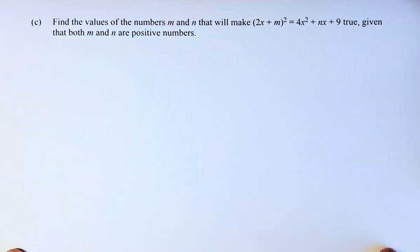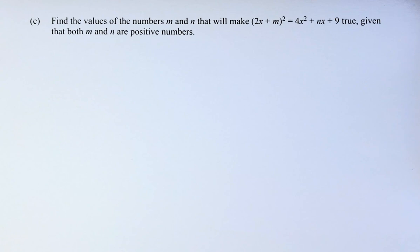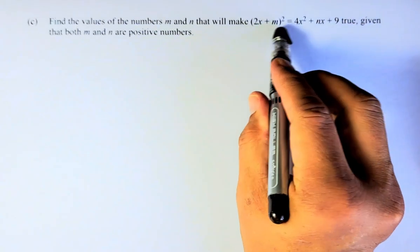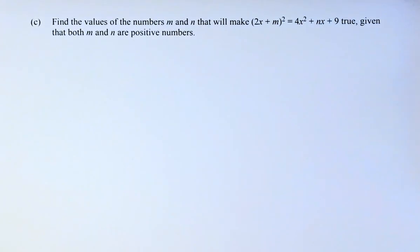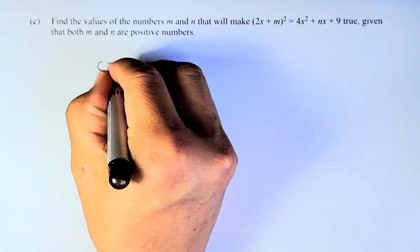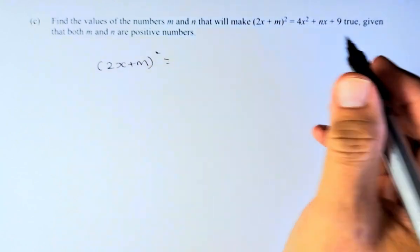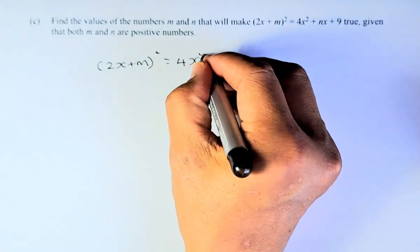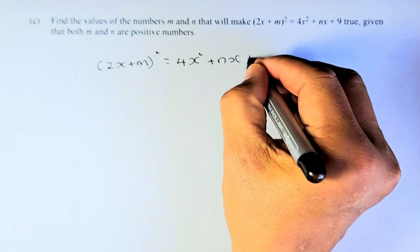Now we're going to do the last question. The last question is actually a Merit question. So find the values of the numbers m and n that will make 2x plus m, squared, equal to 4x squared plus nx plus 9, given that both m and n are positive numbers. So what we need to do, we're going to expand the part 2x plus m.